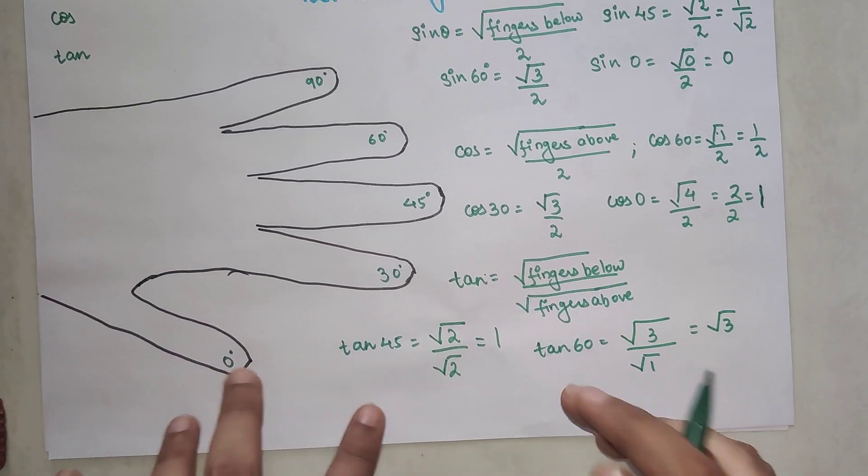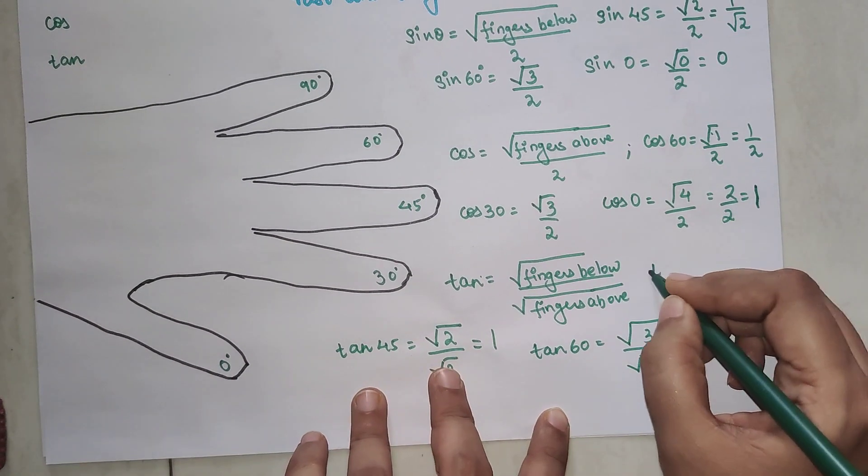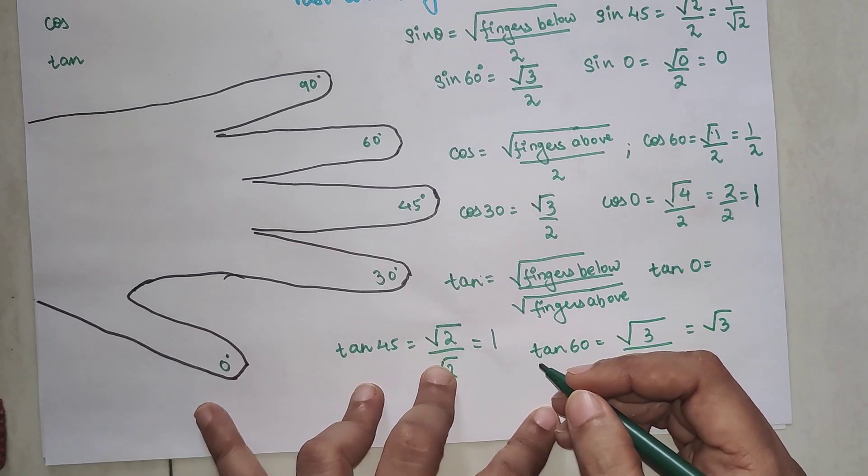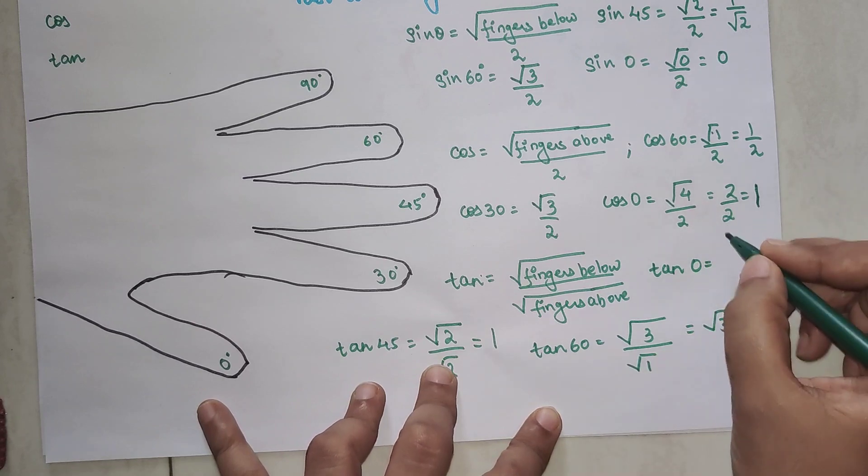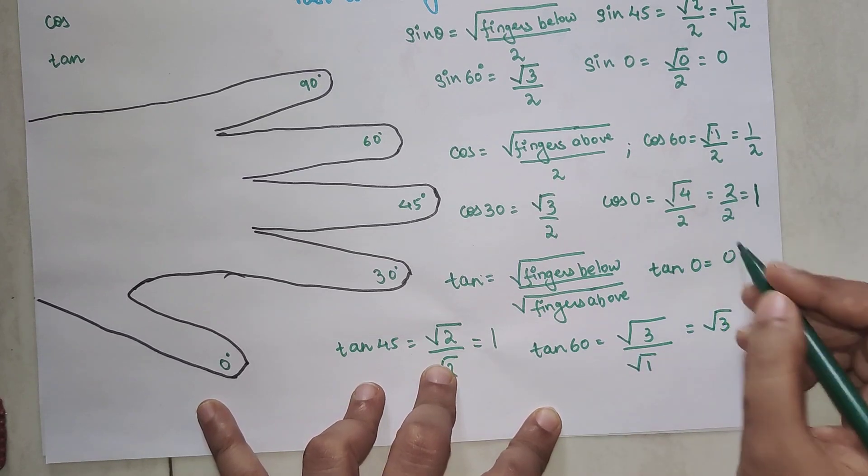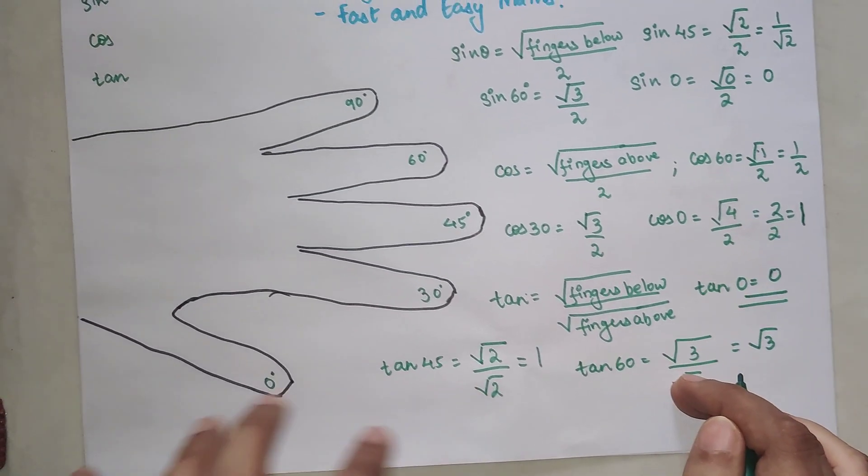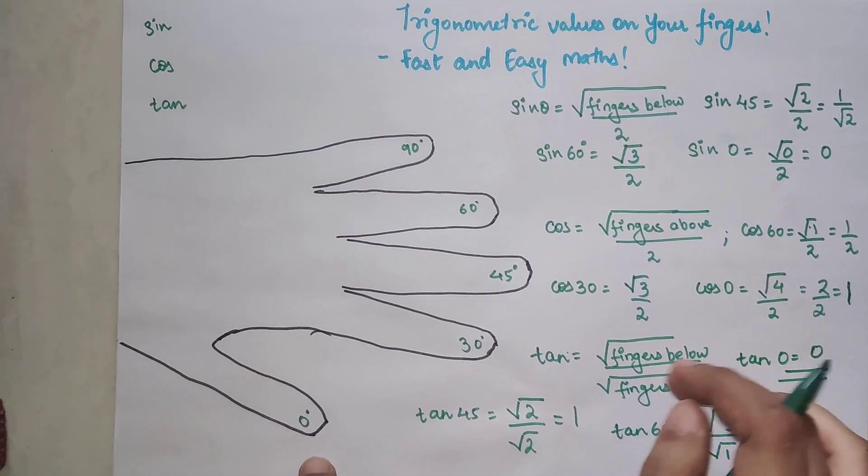Now let's very quickly understand what should be value of tan of 0. So tan of 0, how many fingers are below 0? Nothing. So 0. Now root of 0. Please understand 0 upon anything will also get you 0. So final answer we can just say it is just 0. I hope you are getting the hang of it.